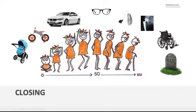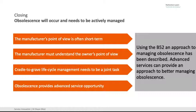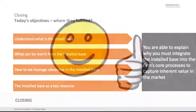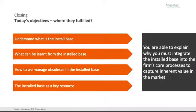To close — think of people getting older and eventually dying, and the same applies to machines. From the manufacturer's point of view, thinking is too short-term and too manufacturing-cycle-based. The manufacturer needs to understand the owner's point of view and how to keep equipment updated. Cradle-to-grave life cycle management needs to be a joint task — both parties need to take responsibility. Obsolescence provides a service opportunity, and we've used the B-52 as a great example. So closing the class: you understand the installed base, you've seen what we can learn from it, and we've looked at obsolescence and how to make money from it — making it a key resource. Thanks very much.